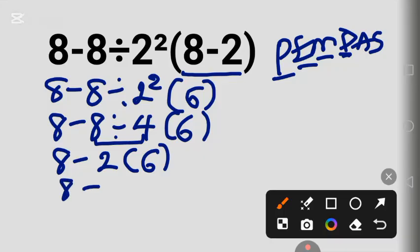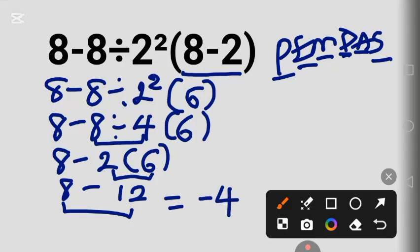Addition, and finally subtraction. 8 minus 12 equals minus 4. This is the correct answer.